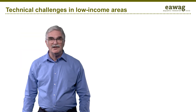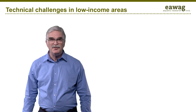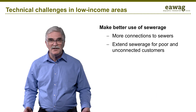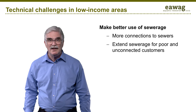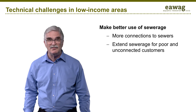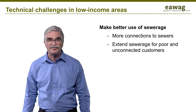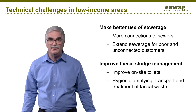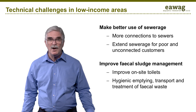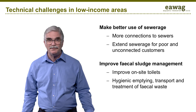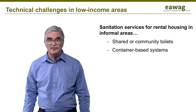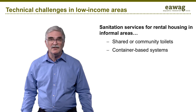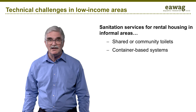These are difficult challenges, but they can and must be addressed. Some possible approaches are listed here. Where sewerage systems exist, they can often have more impact by increasing connections to existing sewers and extending the system or building decentralized systems to reach poor and unconnected customers. Fecal sludge management can be improved through better on-site toilets and by more hygienic emptying, transport and treatment of fecal waste. Where there is rental housing and informal settlements, it may be necessary to consider shared toilets and other solutions for limited space, including container-based systems and financing arrangements to facilitate improvements for tenants.